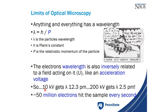Let's put some numbers on it. If we accelerate electrons to 10 kilo-electron volts by applying voltage — since these are charged particles — the wavelength scales down to 12.3 picometers. We were stuck at 400 nanometers; now we're at picometers — a gain of 1,000 times, going from 10⁻⁹ to 10⁻¹² meters.